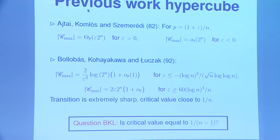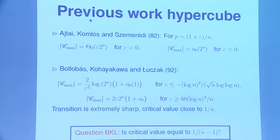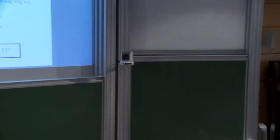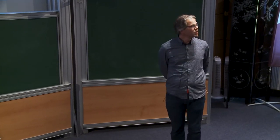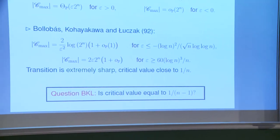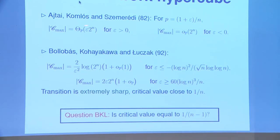This question of Erdős and Spencer was picked up — the first paper is from 1982. Ajtai, Komlós, and Szemerédi basically did something similar to what Erdős-Rényi did for the complete graph: take p = (1 + ε)/n where n is the degree. For ε strictly positive and fixed, the size of the giant component is basically 2^n, whereas for ε negative it's much smaller.